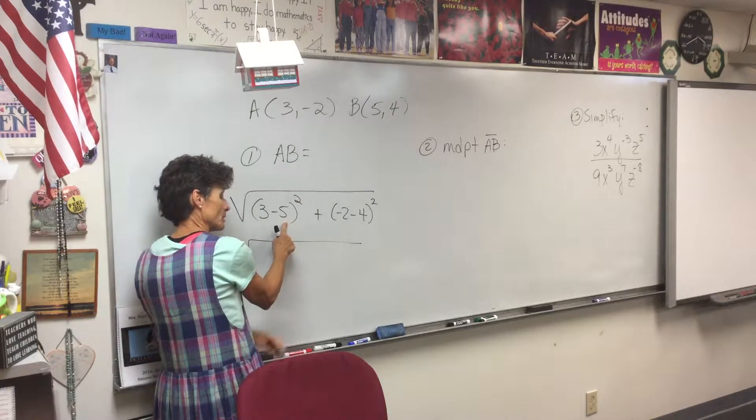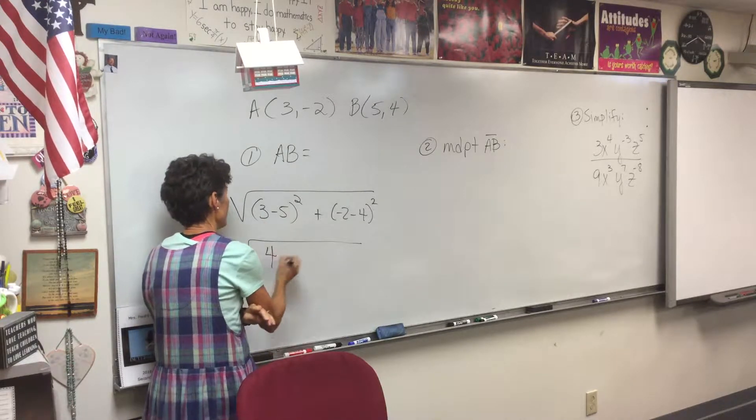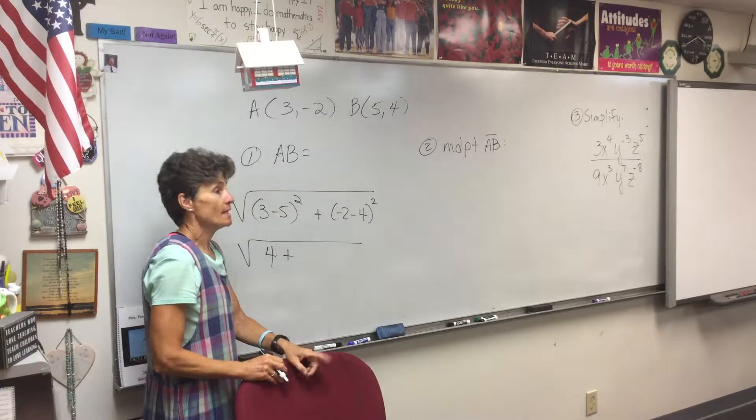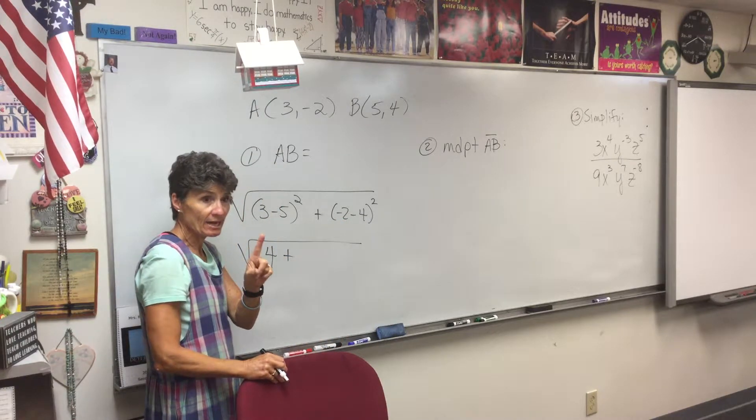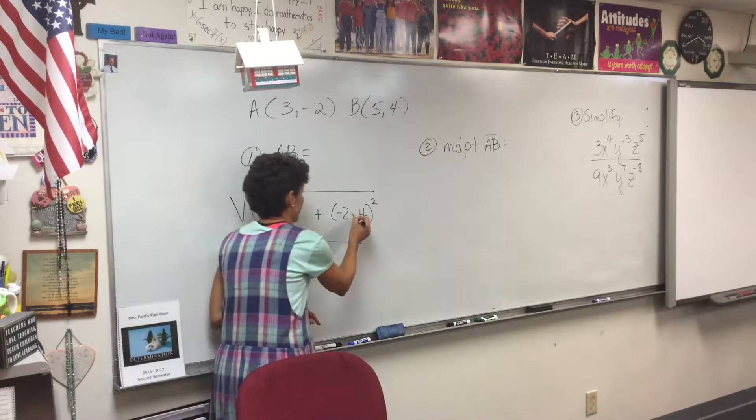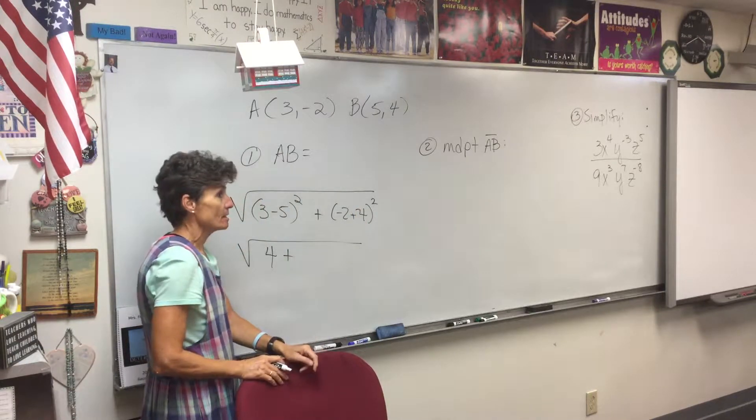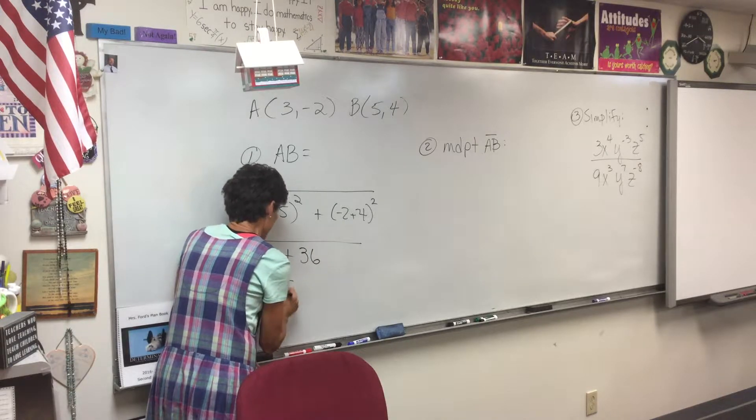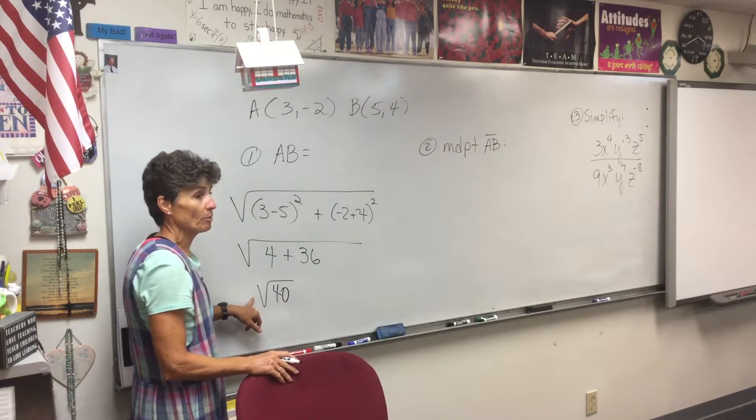So here we go: three minus five squared, four, negative two minus four, negative six. Don't get careless. That's negative six squared, 36. So we have the square root of 40.